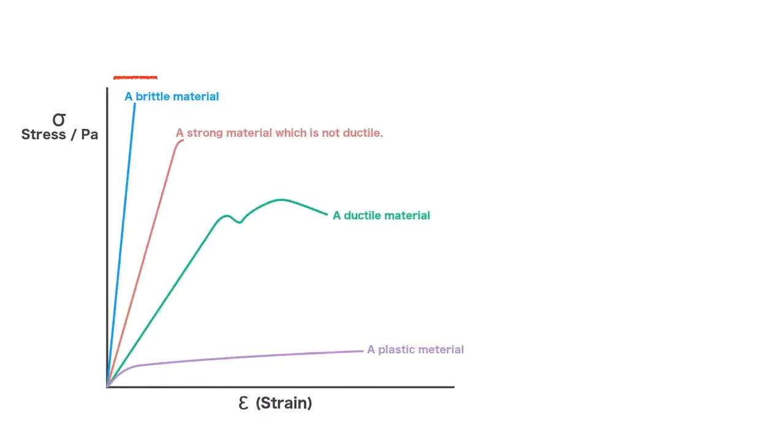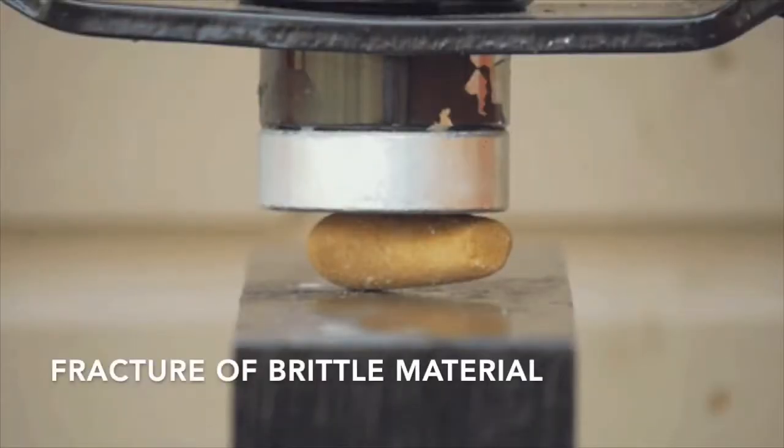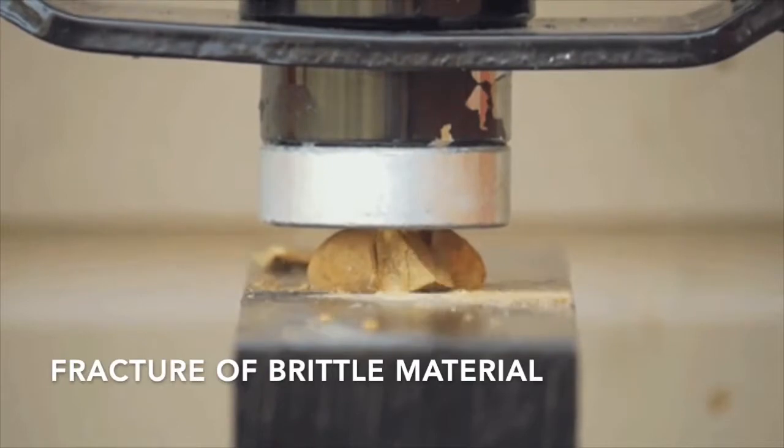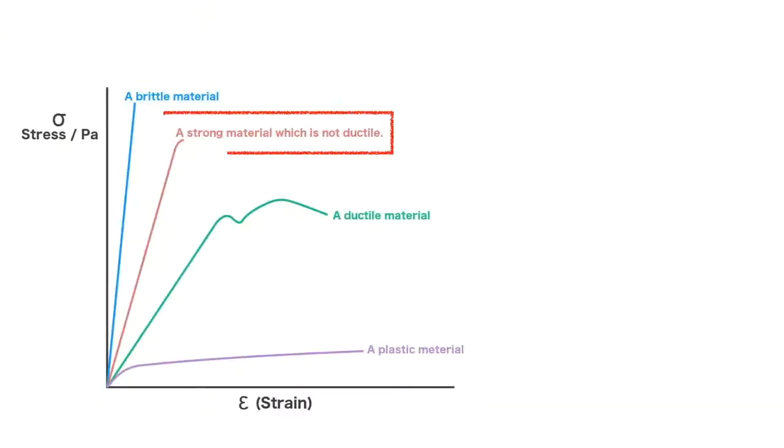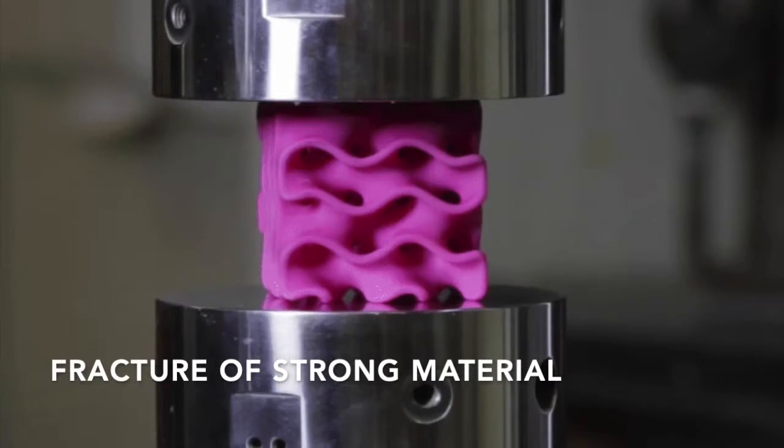If you look at the brittle material, it has a very minimal elastic region and it almost doesn't have any strain hardening or plasticity region. This diagram shows that brittle material will fracture at low displacement without undergoing the plasticity region. The second type of material is strong but not ductile. It can be displaced more compared to brittle material because the strain limit is higher. It has some yield point and again it doesn't undergo plasticity behavior.